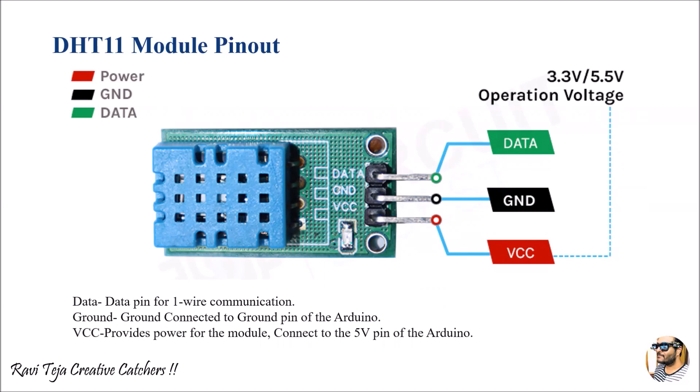The Data pin goes to the Arduino for data communication. The Ground pin goes to the Ground pin of the Arduino, and VCC goes to the positive 5V pin of the Arduino. This sensor operates mostly on 3.3V or 5V.